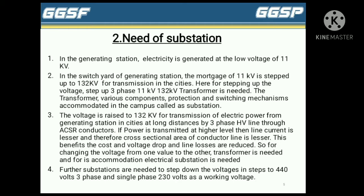In the generating side substation, the voltage is raised to 132 kV for transmission of electrical power from generating station to cities at long distances, by three-phase high voltage line through ACSR — Aluminum Conductor Steel Reinforced cables. If power is transmitted at a higher voltage level, then line current is lesser, and therefore the cross-sectional area of the conductor is lesser. This benefits the cost and voltage drop, and also line losses are reduced.